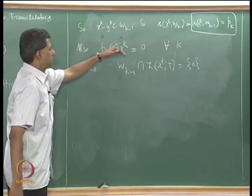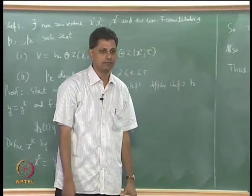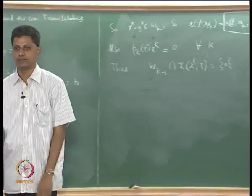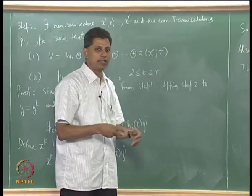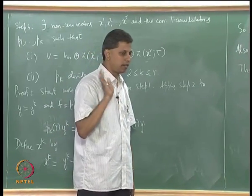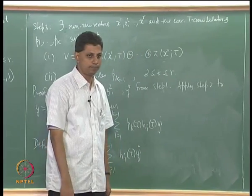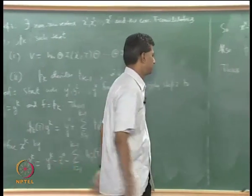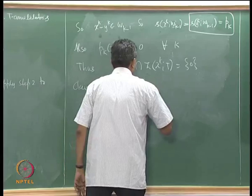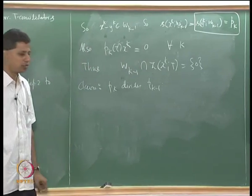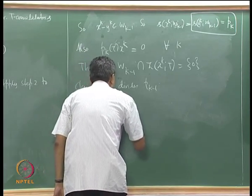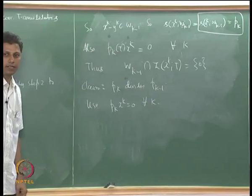This independence condition guarantees a direct sum decomposition. Instead of y_1, ..., y_k we use x_1, ..., x_k to get a direct sum. The last part is showing p_k divides p_{k-1}: use the fact that p_k(T)x_k equals 0 for all k.